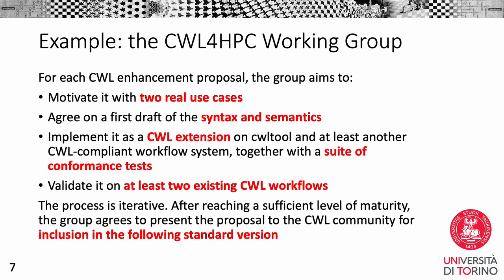Normally, we do not reach perfection on the first iteration, so the process iterates back. We validate what is okay and what is not. For the things that are not okay, we rethink a new syntax, or expand the syntax and semantics with what is missing. Then we implement the new features and validate them again. After we reach a sufficient level of maturity for the feature, the group agrees to present the proposal to the CWL community and to the CWL leadership team, asking for the inclusion of the feature in the following standard version.